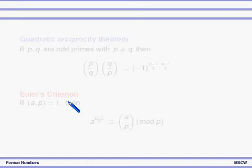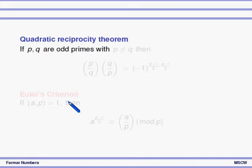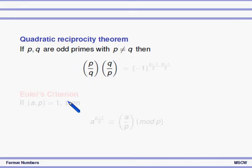The next statement is the quadratic reciprocity theorem. If p and q are odd primes, p ≠ q, and p and q are relatively prime, then the Legendre symbol (p/q) times (q/p) equals (−1)^((p−1)/2 · (q−1)/2).